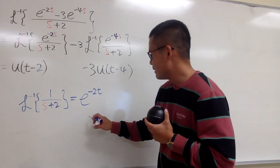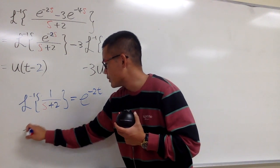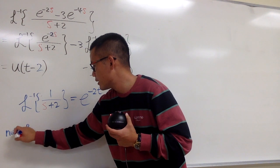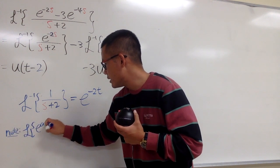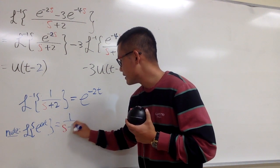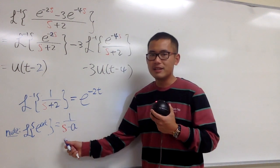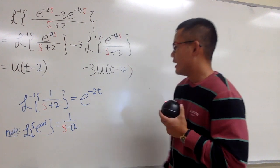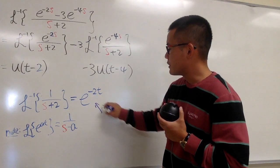The reason is because we know that the Laplace transform of e to the at is equal to 1 over s minus a. We are looking at this backwards. This will be your function, f of t.